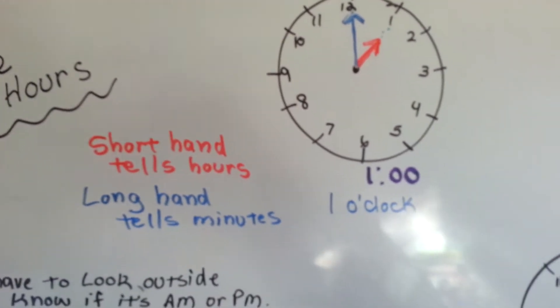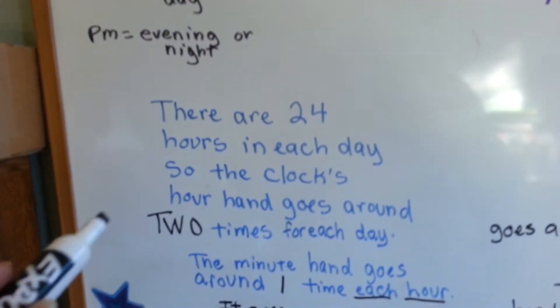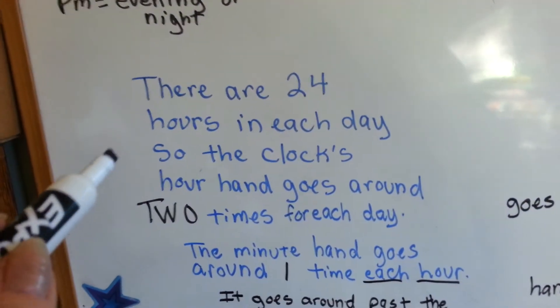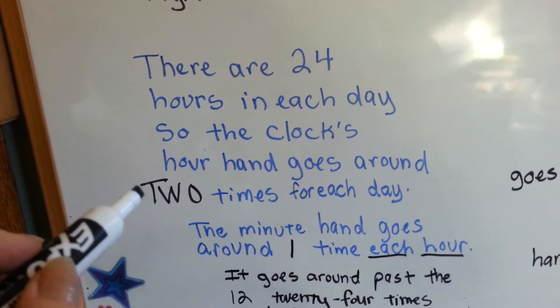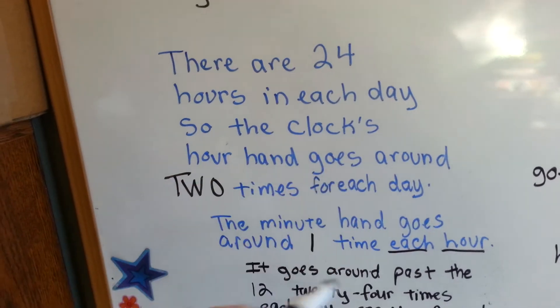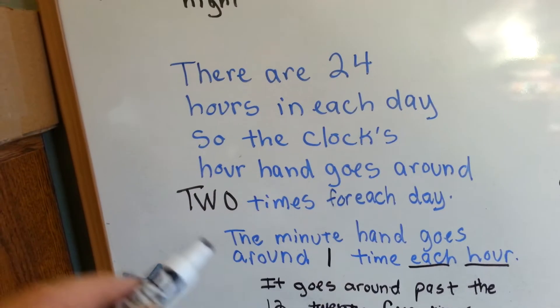There are 24 hours in each day. So the clock's hour hand has to go around two whole times around the clock for each day.